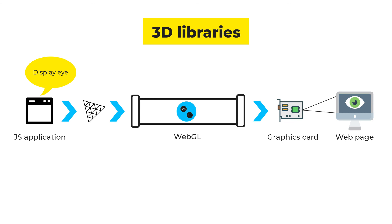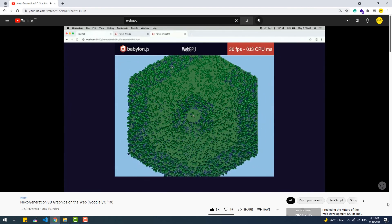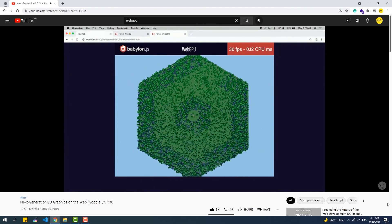Three.js, Babylon.js, and other 3D libraries serve as a layer between the actual program and the WebGL API to simplify the code. For example, to create a cube using raw WebGL, 82 lines of code were needed, but using Three.js the same cube was created with just 18 lines.